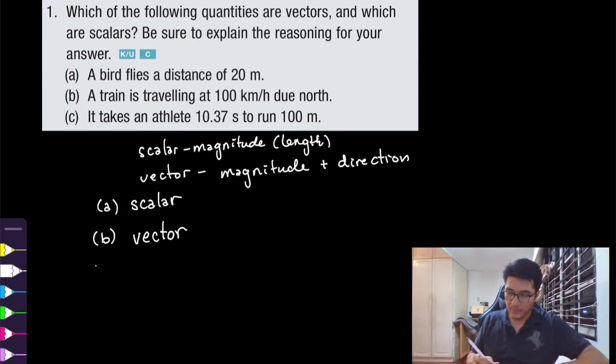For part C, it takes an athlete 10.37 seconds to run 100 meters. Just because they're giving you more information, they're trying to trick you here. But time is a scalar quantity and 100 meters is a scalar quantity. It didn't give us a direction, so for part C this is all just scalar quantity information.